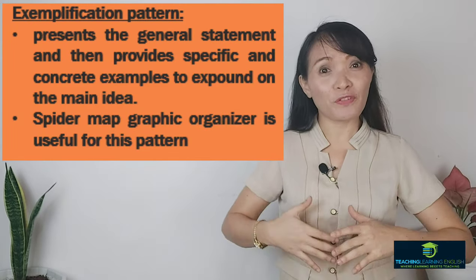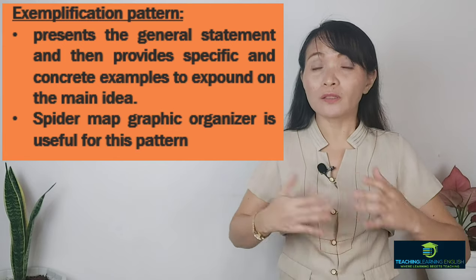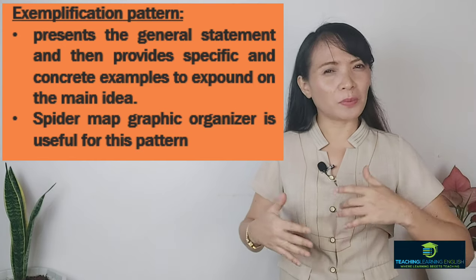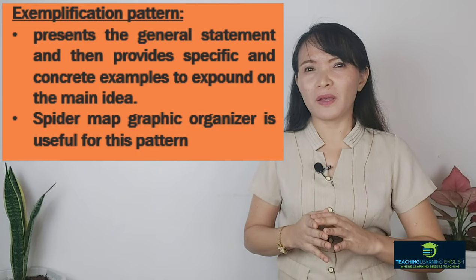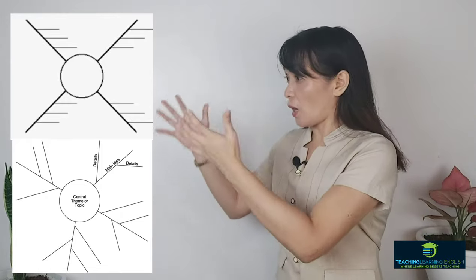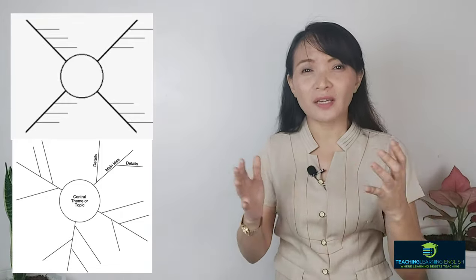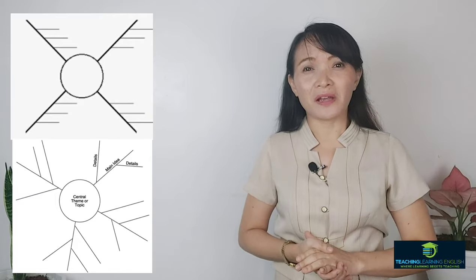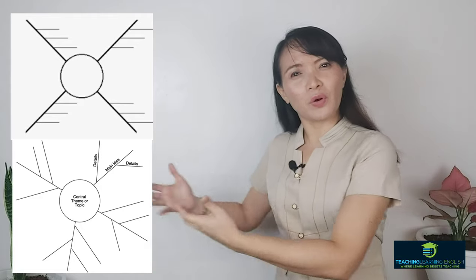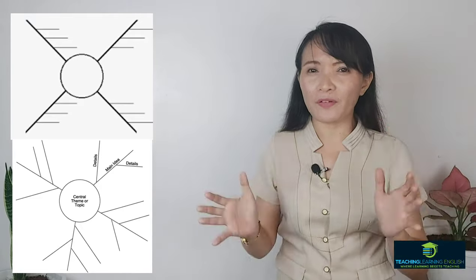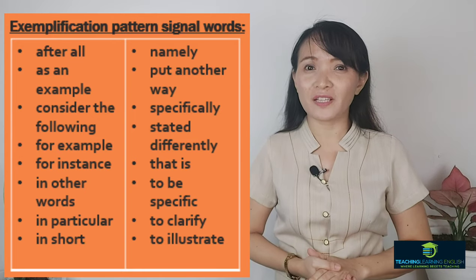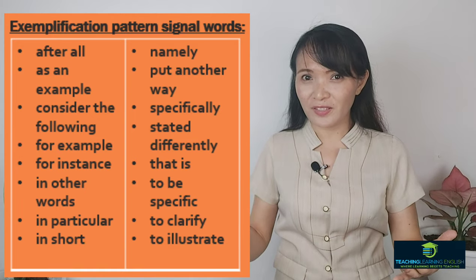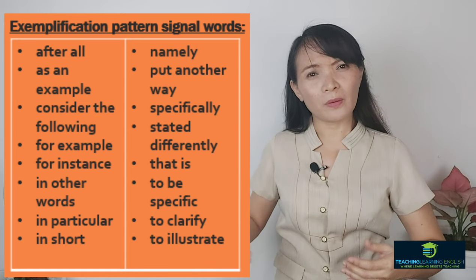The second pattern is exemplification. This pattern presents a general statement and then provides specific and concrete examples to expound on the main idea. If we are going to use a graphic organizer, the best to use is a spider map, also known as a semantic map. The main idea is placed along its diagonal line, while the details are placed on the sides of the diagonals. Signal words for exemplification include: after all, as an example, for example, and more.